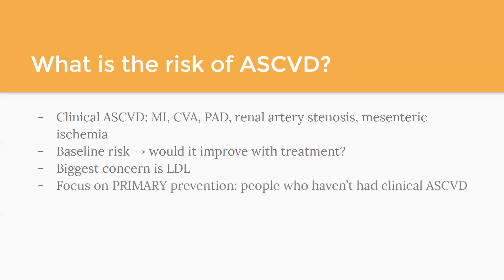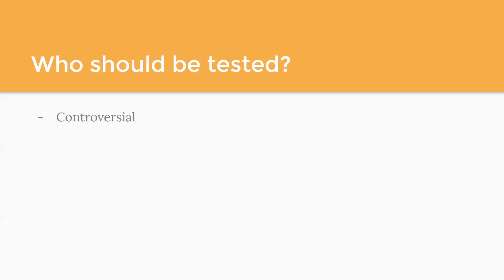This presentation is specifically about primary prevention. For this patient, he has not had clinical ASCVD — he's never had a stroke, heart attack, or peripheral arterial disease. These recommendations are only for people who have not had those events, so it doesn't include people who've had an MI, stroke, or those with high triglycerides, which have their own caveats. The question of who should be tested is about screening, and it's a little bit debated — there are some differing thoughts on it.